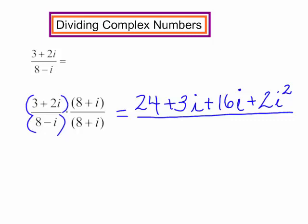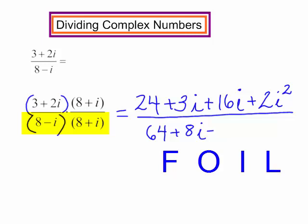In the denominator, I'm doing FOIL again. The first terms, 8 times 8 is 64. The outer terms, 8 times i. The inner terms, negative i times 8. And the last terms, a negative i times i will be a negative i squared.